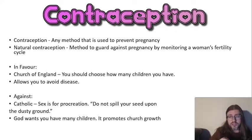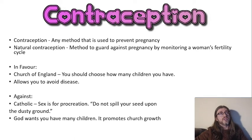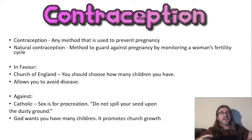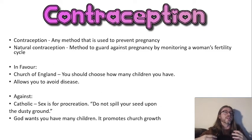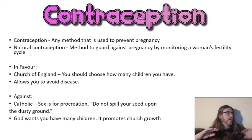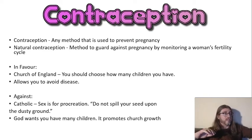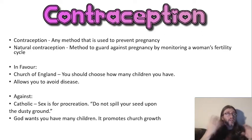Natural contraception is methods used to stop someone getting pregnant that are not man-made. The Catholic ones include the withdrawal method, where towards the end of sex you stop and do not ejaculate, so sperm are not released into the womb.